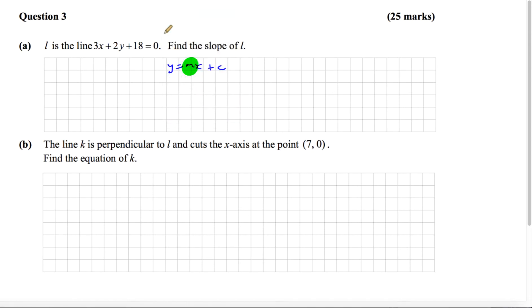We can move the 3x and the 18 across, so we have 2y equals negative 3x and negative 18. Just moved this across the equal sign to become negative, and plus 18 the same, and that will become positive.